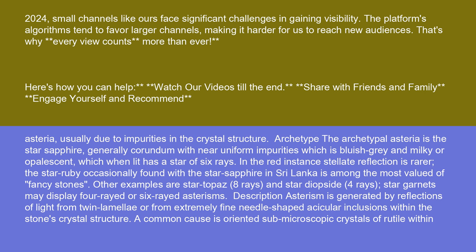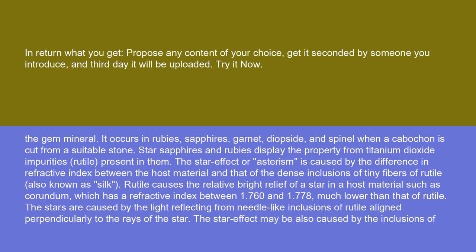Asterism is generated by reflections of light from twin lamellae or from extremely fine needle-shaped acicular inclusions within the stone's crystal structure. A common cause is oriented submicroscopic crystals of rutile within the gem mineral. It occurs in rubies, sapphires, garnet, diopside, and spinel when a cabochon is cut from a suitable stone.